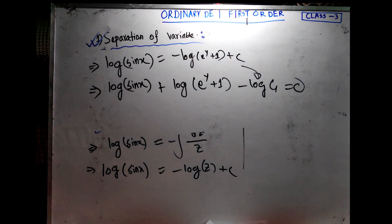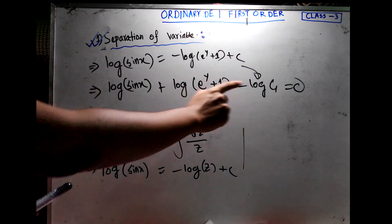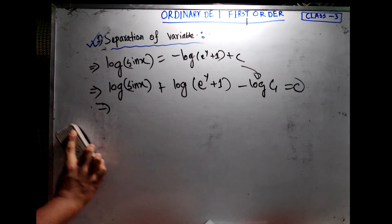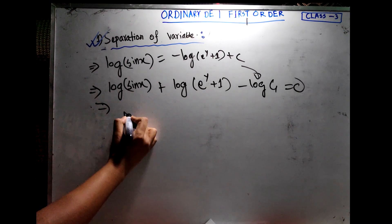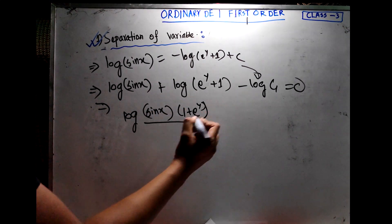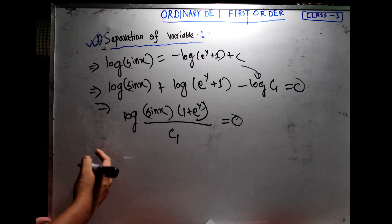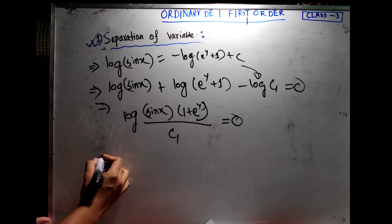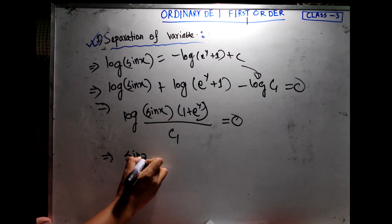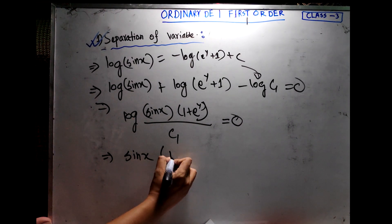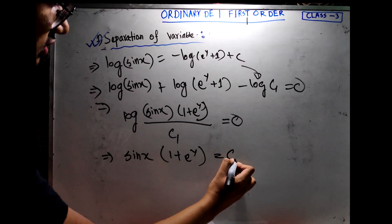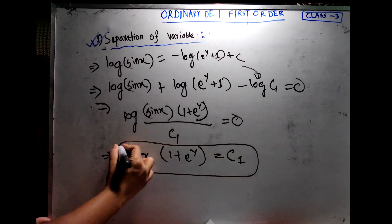Focusing on the log terms: log c₁ = 0 gives us the final form. Combining logarithms: log c₁ leads to 1 + e^y = 0 form. This completes the solution for this example.